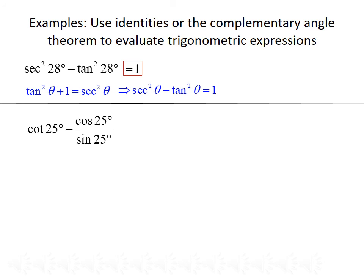For the next example, consider cotangent of 25 minus cosine of 25 divided by sine of 25. We'll use the quotient identity: cotangent of theta is defined as cosine of theta over sine of theta. Using that, cosine of 25 divided by sine of 25 can be rewritten as cotangent of 25. So cotangent of 25 minus cotangent of 25 gives us 0.